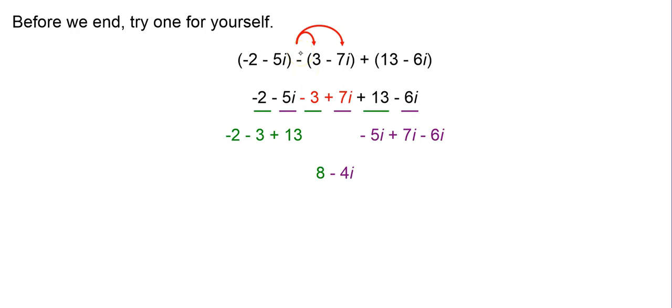Hopefully you got this one right. Where the mistakes usually happen is right here with the subtraction. Again, you have to give that negative to everything in the parentheses. So it's like distributing a negative 1. So this becomes a negative times 3, which is minus 3, and a negative times a negative 7i, which becomes a plus 7i.